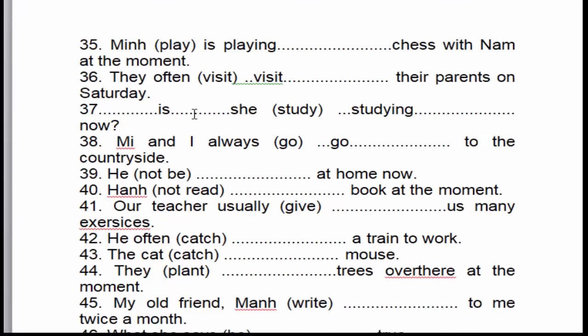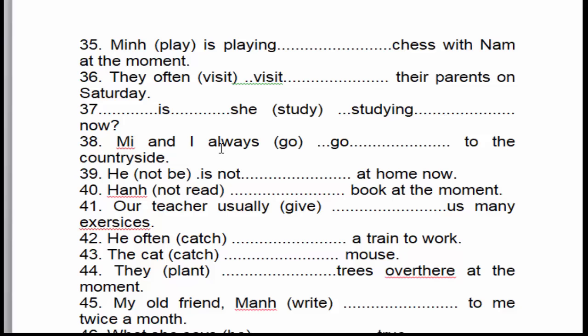Câu số 39: 'He is not at home now.' Anh ấy không ở nhà vào lúc này. 'Now' là dấu hiệu nhận biết của thì hiện tại tiếp diễn. Anh ấy không có ở nhà bây giờ, cho nên chúng ta chia ở thể phủ định. 'He' là chủ ngữ số ít — to be là 'is not'. Cộng động từ thêm '-ing'.